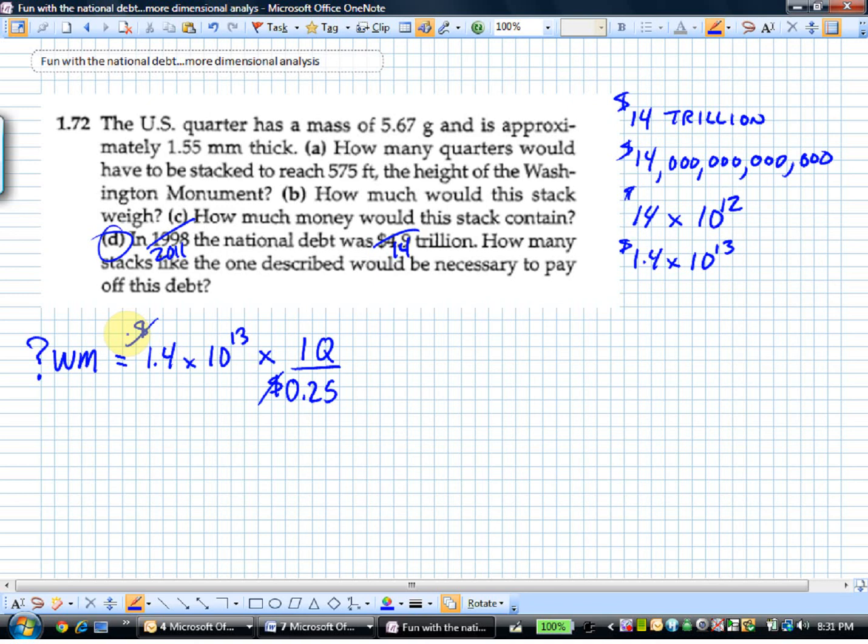If we stopped right there we'd know how many quarters it would take to equal the national debt. We're going to pay that in stacks as tall as the Washington Monument. Now we go from quarters to a height. We know from the problem that 1.55 millimeters is the thickness of the quarter, or 1.55 millimeters per quarter. Quarters cancel quarters.